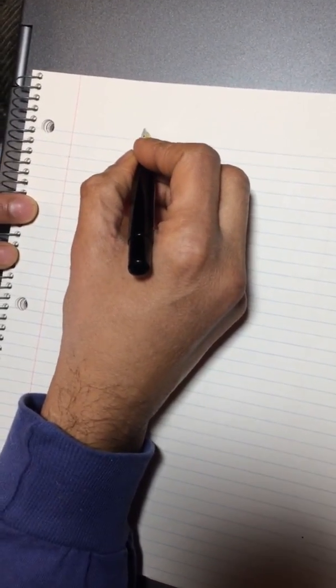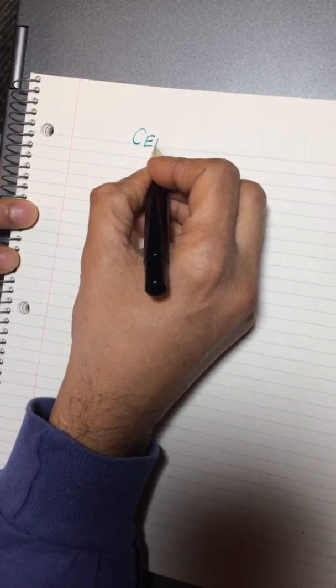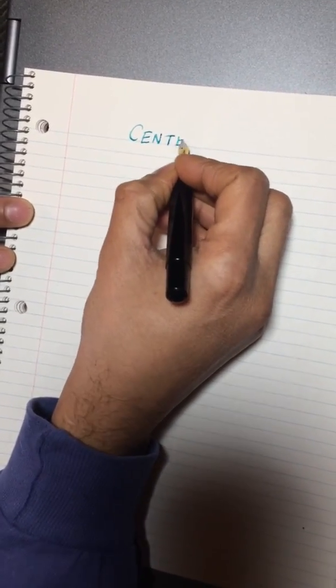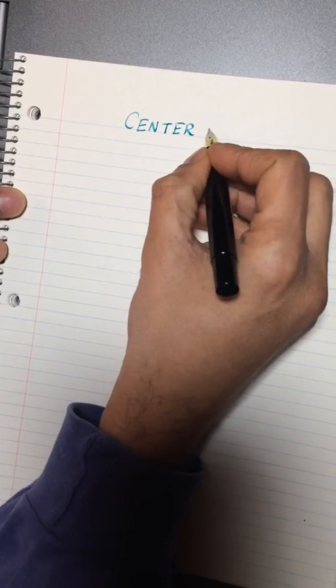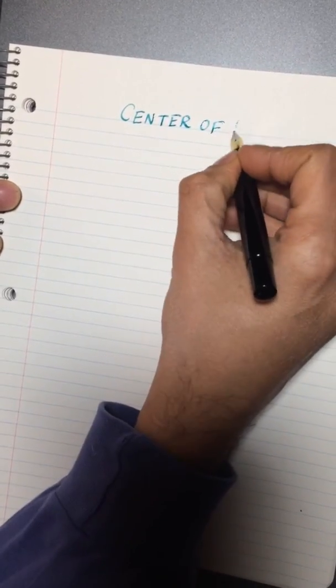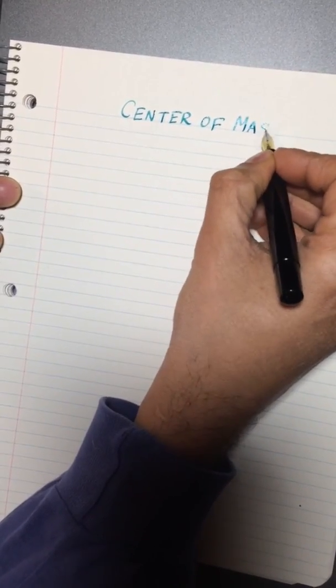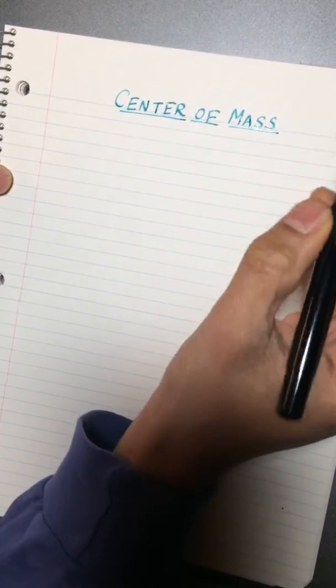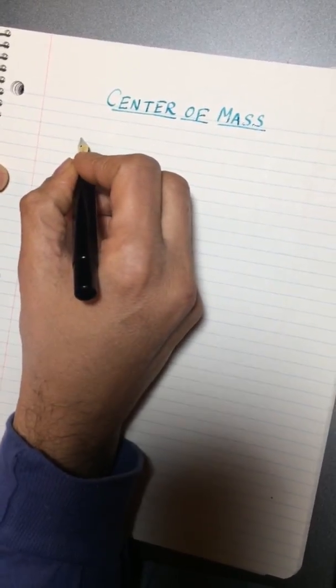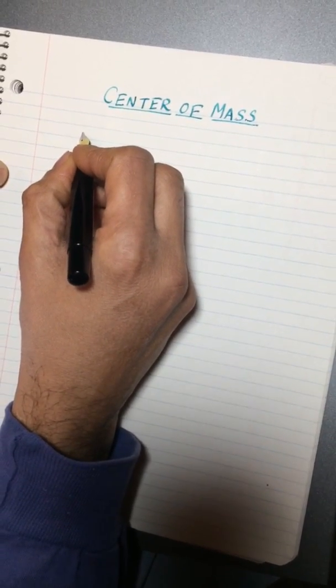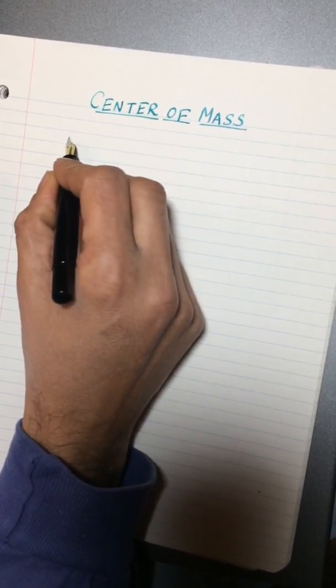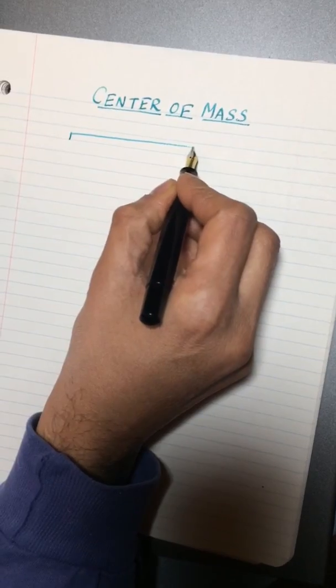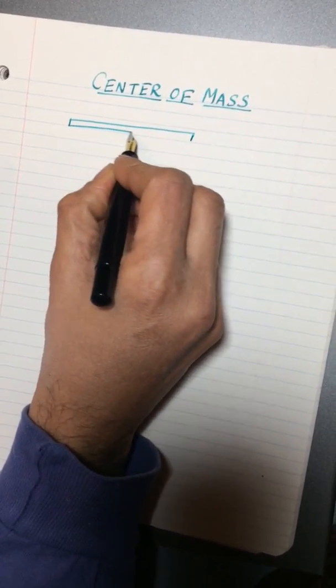Hello this is Dr. Viv talking about center of mass. Today I will talk about how to find the center of mass of an object that is not discrete. We have something continuous like a rod for example.